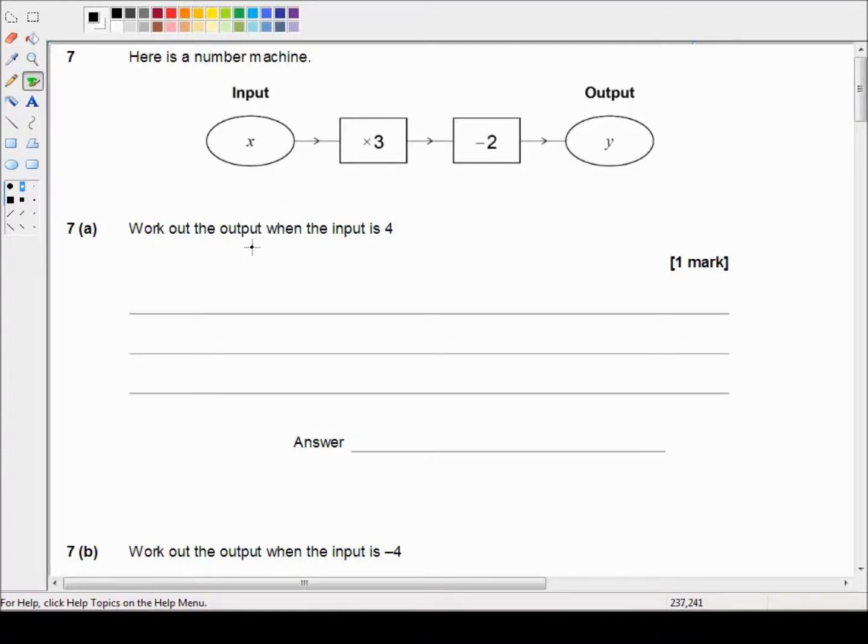Let's work out the output when the input is 4. So 4 goes into the machine, we multiply by 3, and that equals 12. Then in the next step we're subtracting 2, so that's 12 minus 2 equals 10. Our output is y, so our answer is 10.